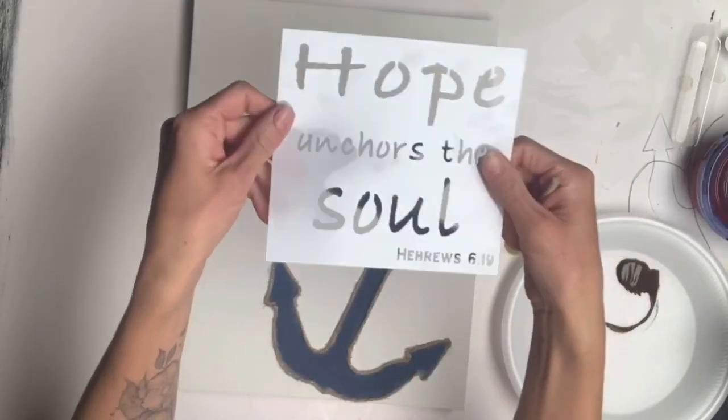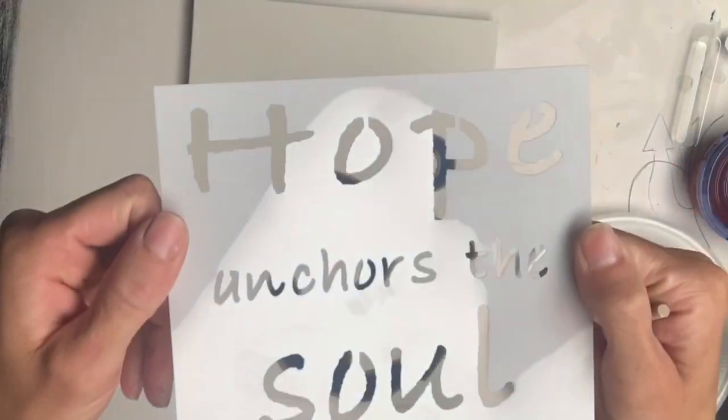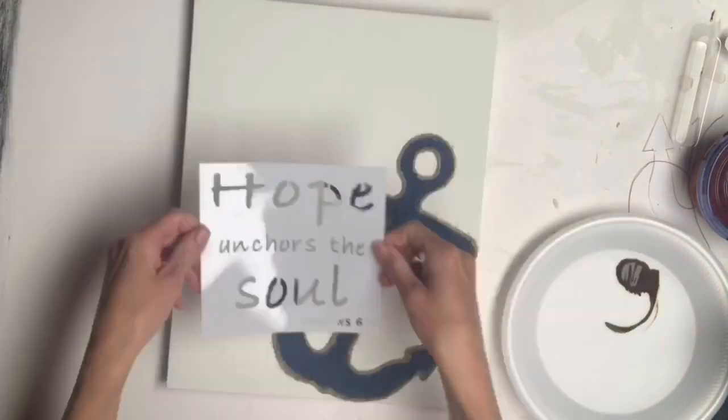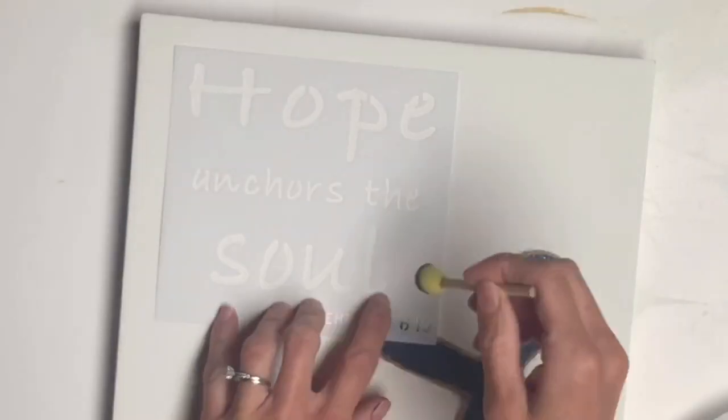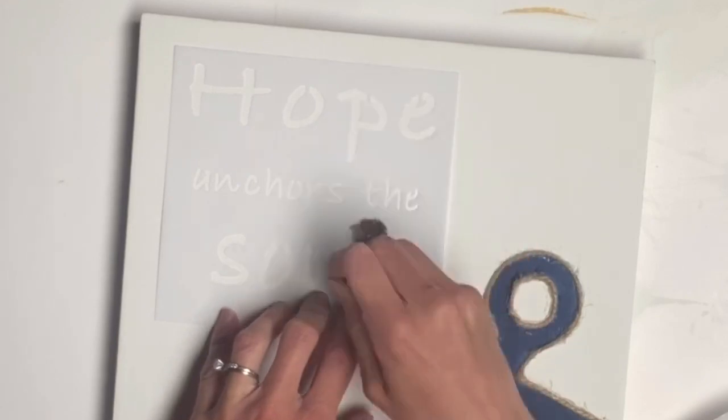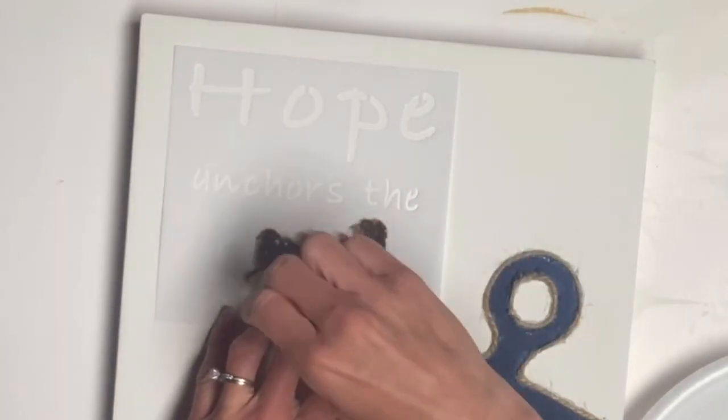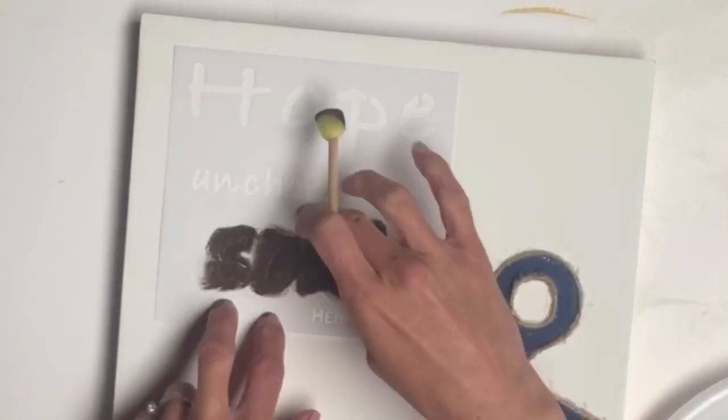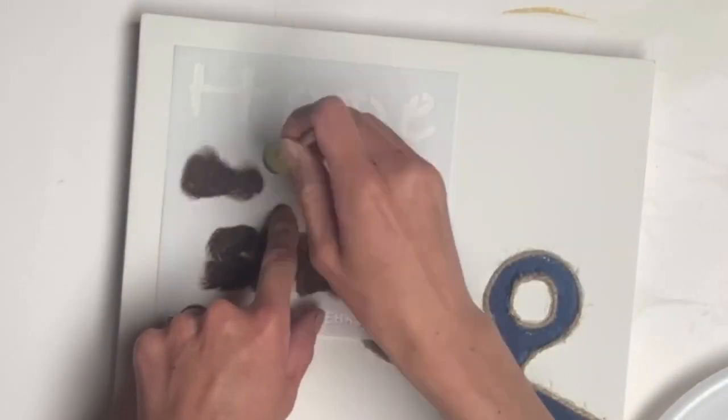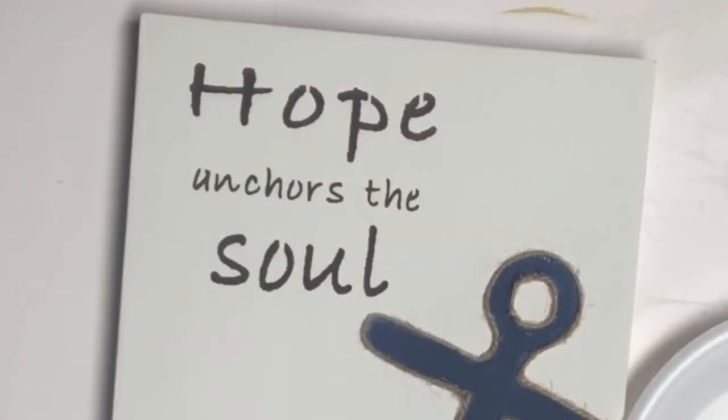I wanted this bible verse hope anchors the soul so I ended up making this with my Cricut using some chocolate Wise Owl paint and a foam dabber. I just dabbed over the entire stencil. If you don't have a Cricut you can always do each letter individually. I know it takes a little longer but it is an option.